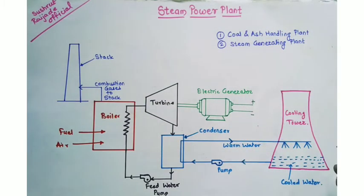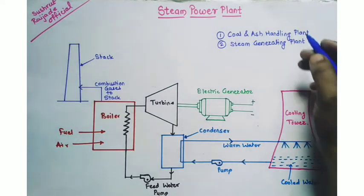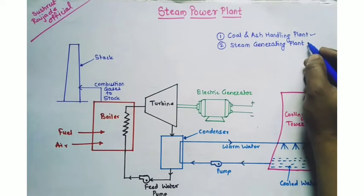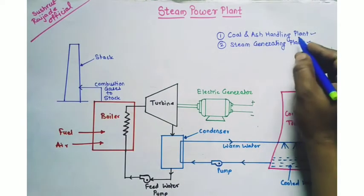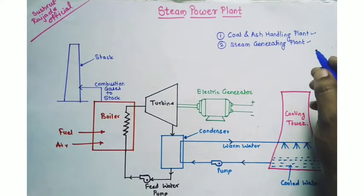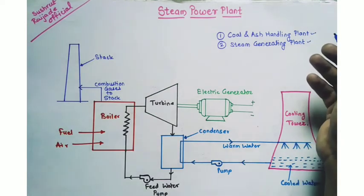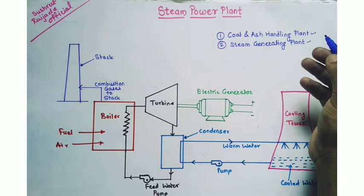In a steam power plant there are mainly two plants. The first one is a coal and ash handling plant, and the second one is a steam generating plant. In the coal and ash handling plant, coal is transported to the steam power station by road or rail and is stored in the coal storage plant.